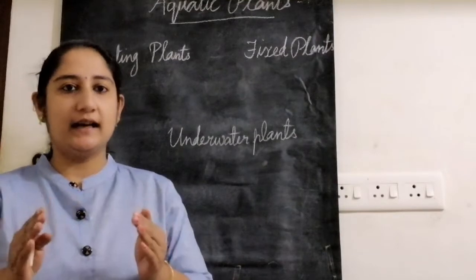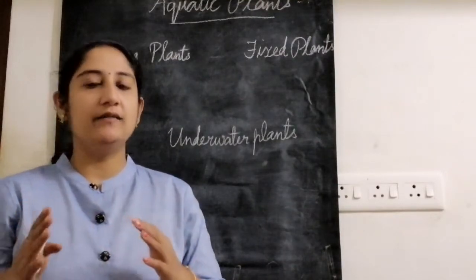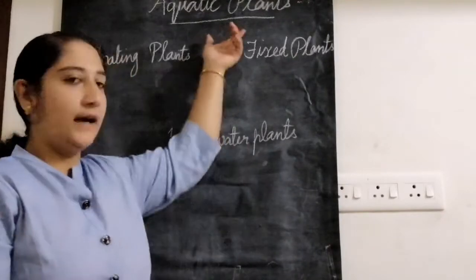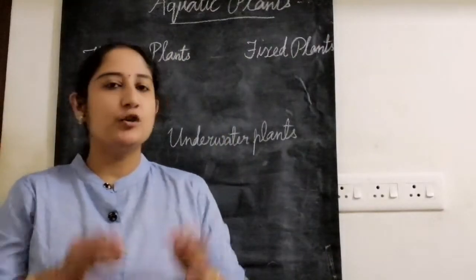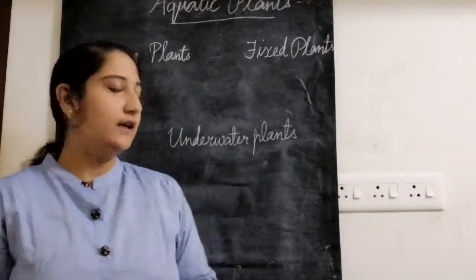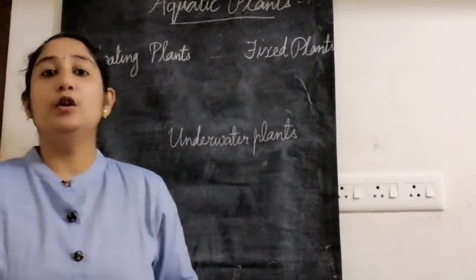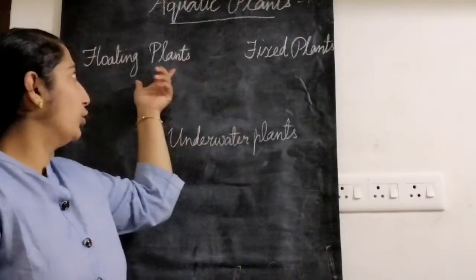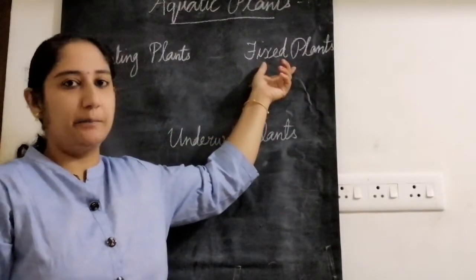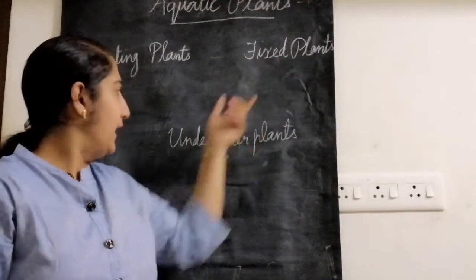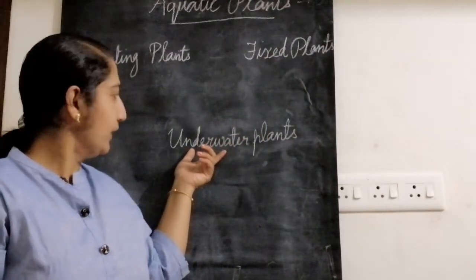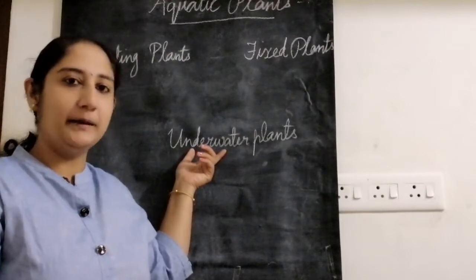So the plants that are adapted to survive in water — the plants that grow in water — are called aquatic plants. Based on this, aquatic plants are categorized into three types: the first one is called floating plants, the second one is called fixed plants, and the third one is called underwater plants.